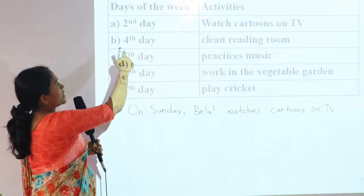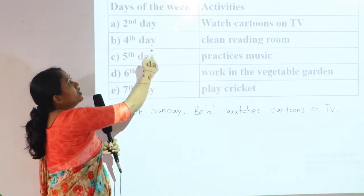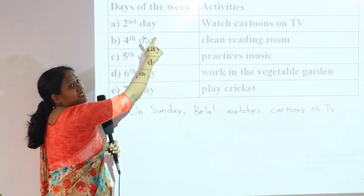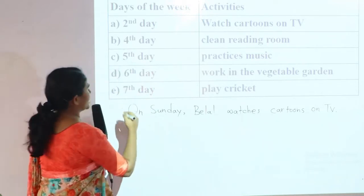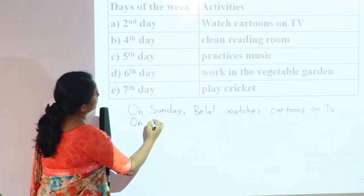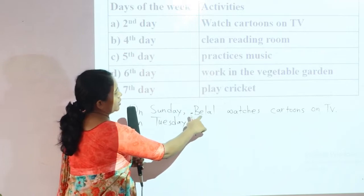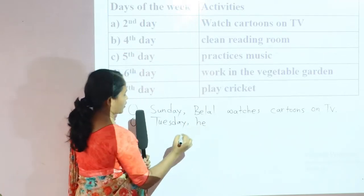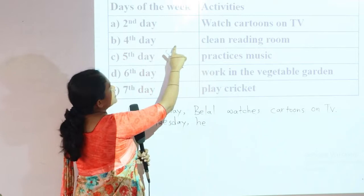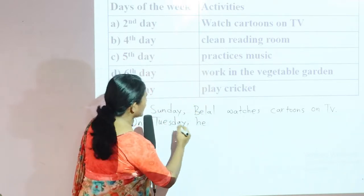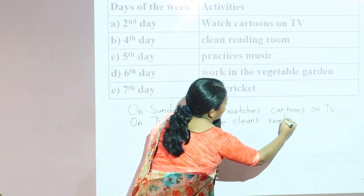Now the second sentence is for the fourth day. We don't have a third day activity, so Sunday is the second day, Monday is the third day, and the fourth day is Tuesday. Instead of Belal, we are going to write 'he' — this is a pronoun. On Tuesday, he cleans the reading room.